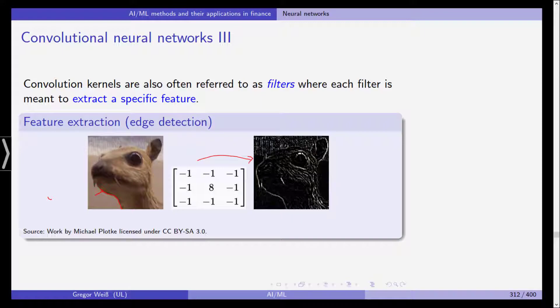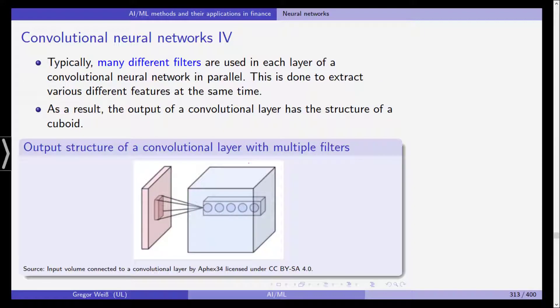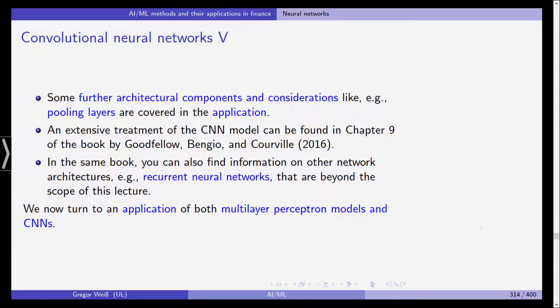This is one layer of information we get, and we can apply many filters to this picture, extract different features, and then later on learn from this. Typically many different filters are used in each layer of a convolutional neural network in parallel to extract different features at the same time. As a result, the output of a convolutional layer has the structure of a cuboid. You get many different multiple filters, and then you can recombine them to get a full idea of what the picture looks like and then train your neural network.